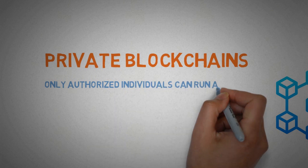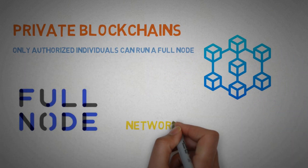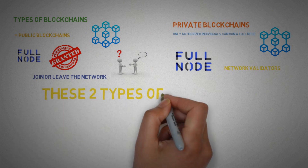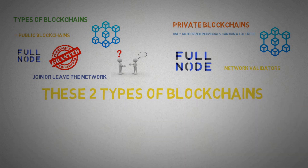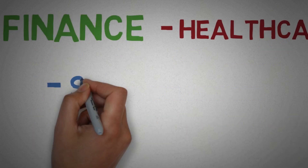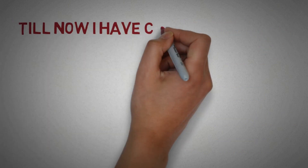Second, private blockchains — these are blockchains where only authorized individuals can run a full node and become a network validator. These two types of blockchain networks are used for different purposes across different sectors, such as finance, healthcare, supply chain, and social media.